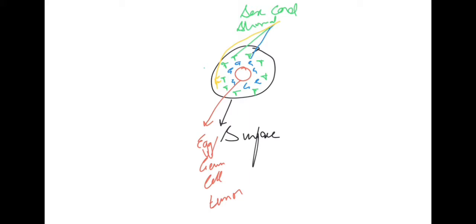Tumors are classified according to the components that gave birth to them. For example, if the egg or germ cell gives rise to a tumor, it is called a germ cell tumor. If the surface epithelium gives rise to the tumor, it's called a surface epithelial tumor. If the granulosa cells, theca cells, or fibroblasts give rise to a tumor, they are classified as sex cord stromal tumors.